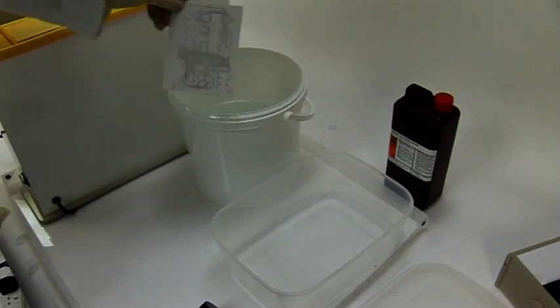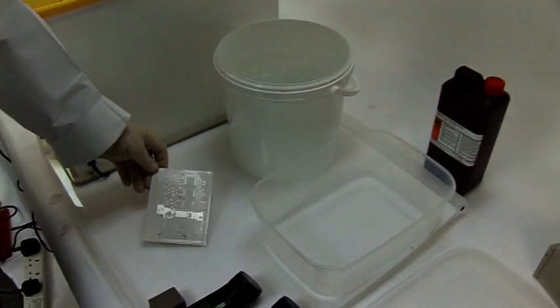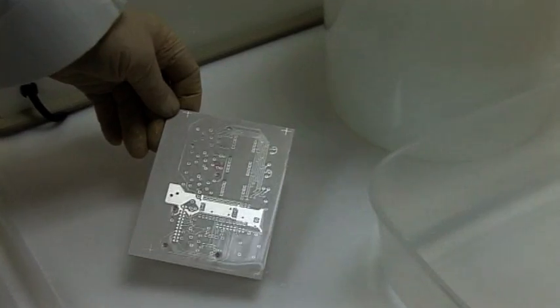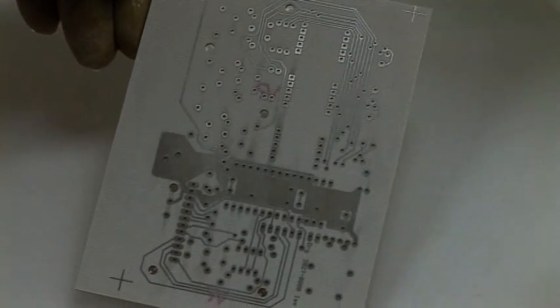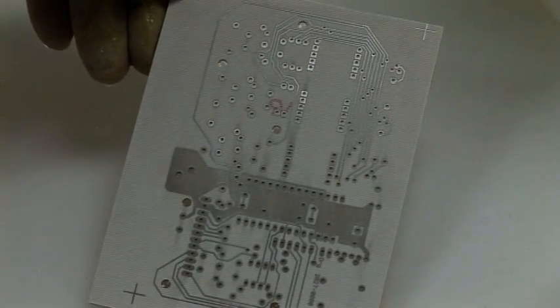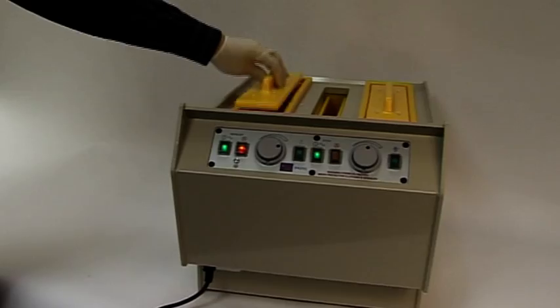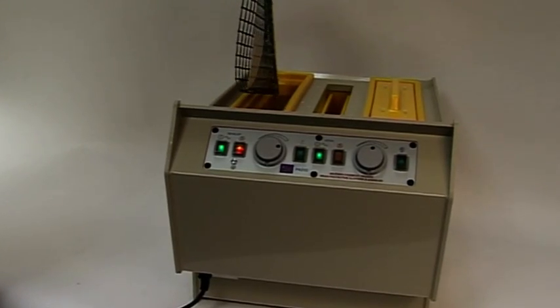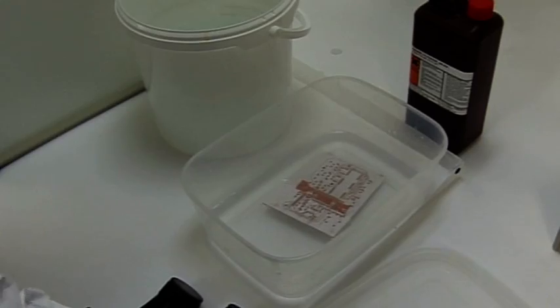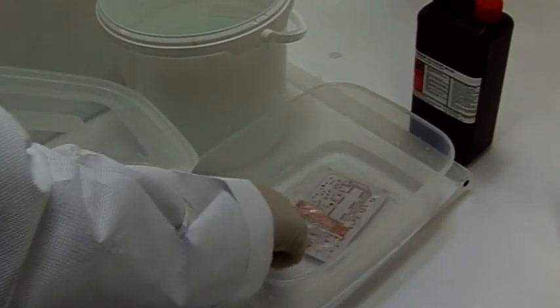Not only will applying a tin coating improve the aesthetics of the board, it will also prevent the copper from oxidizing and make it far easier to solder components into place. Again, a temperature controlled PCB tank can be used or a tray or container as shown here.